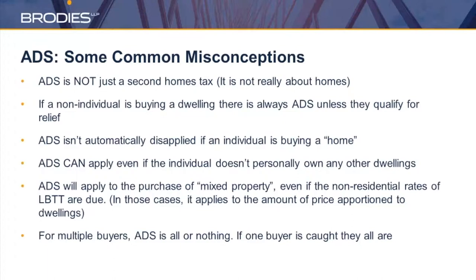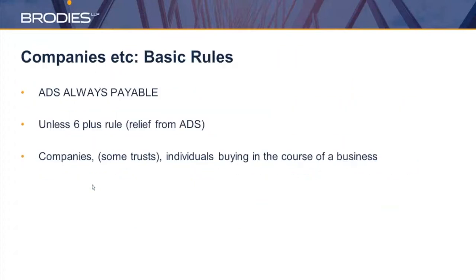Another problem is that for multiple buyers it's a kind of all-or-nothing situation — if one buyer's caught by the ADS, they'll all be caught. Going back to non-natural persons, i.e. companies and things like that, ADS is always payable even if they're only buying one dwelling. So it's always payable by companies, some trusts, and individuals buying in the course of business. This is sometimes unexpected, not least because it talks about a tax on second homes. There are exceptions such as the six-plus relief: if you buy six or more dwellings as part of a single transaction, there's no ADS.